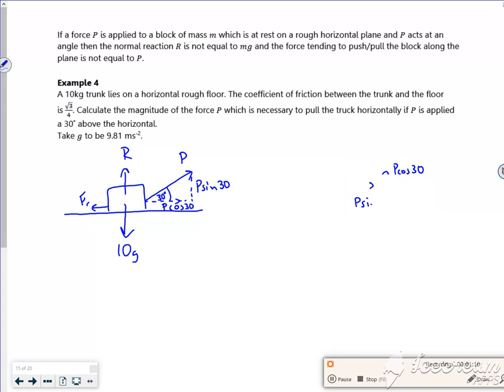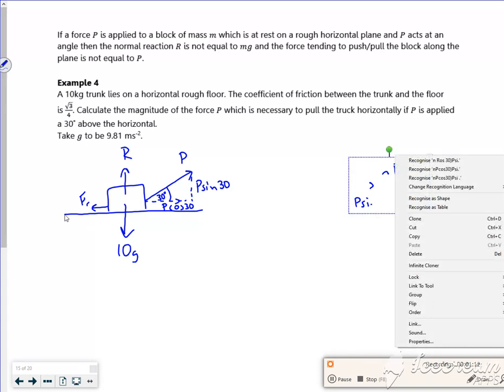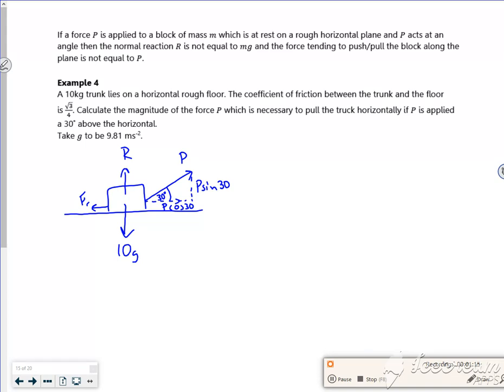Right now then, let's see what we're trying to do. Let's work out, so it says calculate the magnitude of P necessary to pull it. Right, so we need it to break it, don't we? We need it right on that kind of breaking point. So let's work out what our friction is first then. So let's find my F max, my FR, whatever you want to call it.